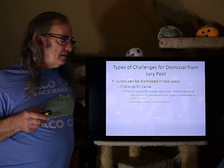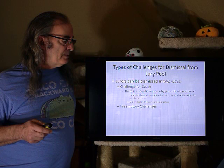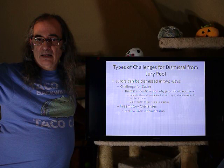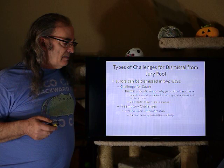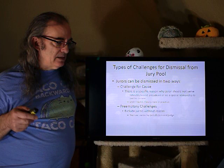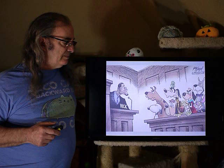Peremptory challenges constitute where we see most jurors being dismissed. A peremptory challenge allows an attorney to say they don't want juror number 13 without supplying a reason. The number of peremptory challenges varies by jurisdiction and by the judge setting the guidelines for the trial at the beginning.